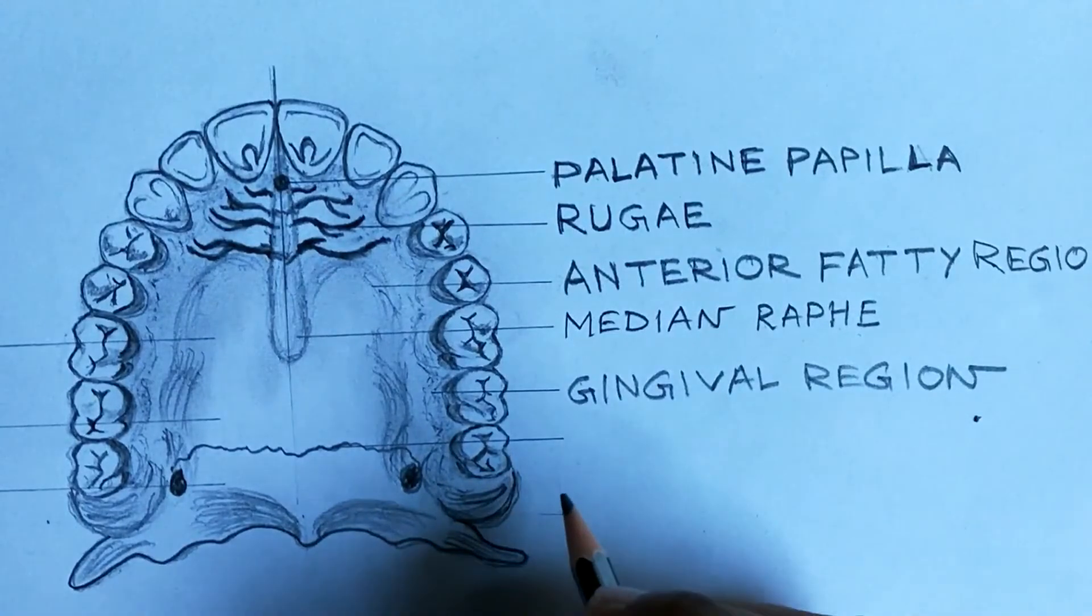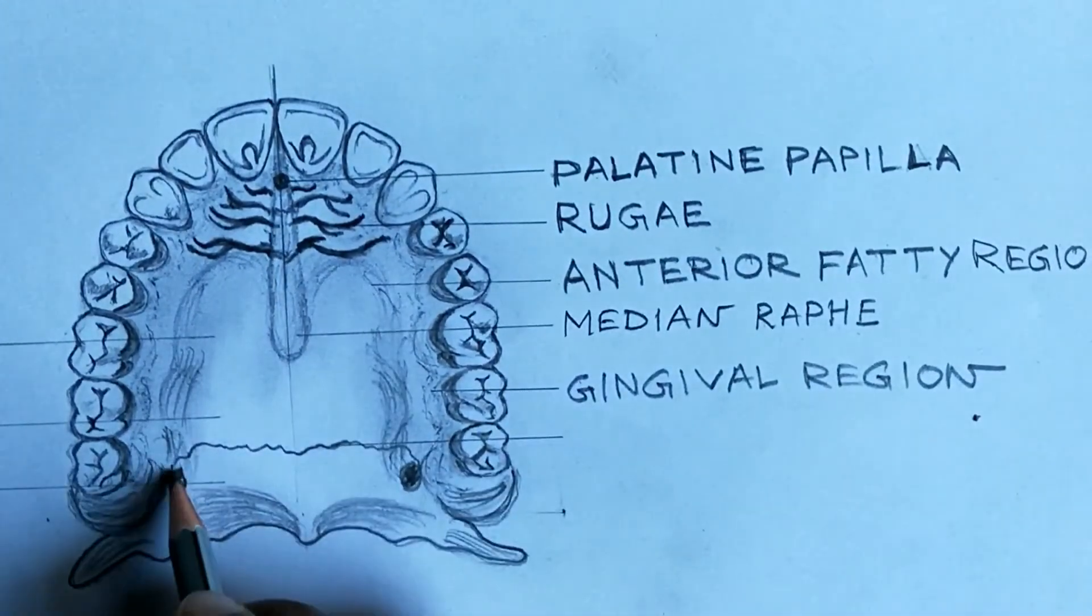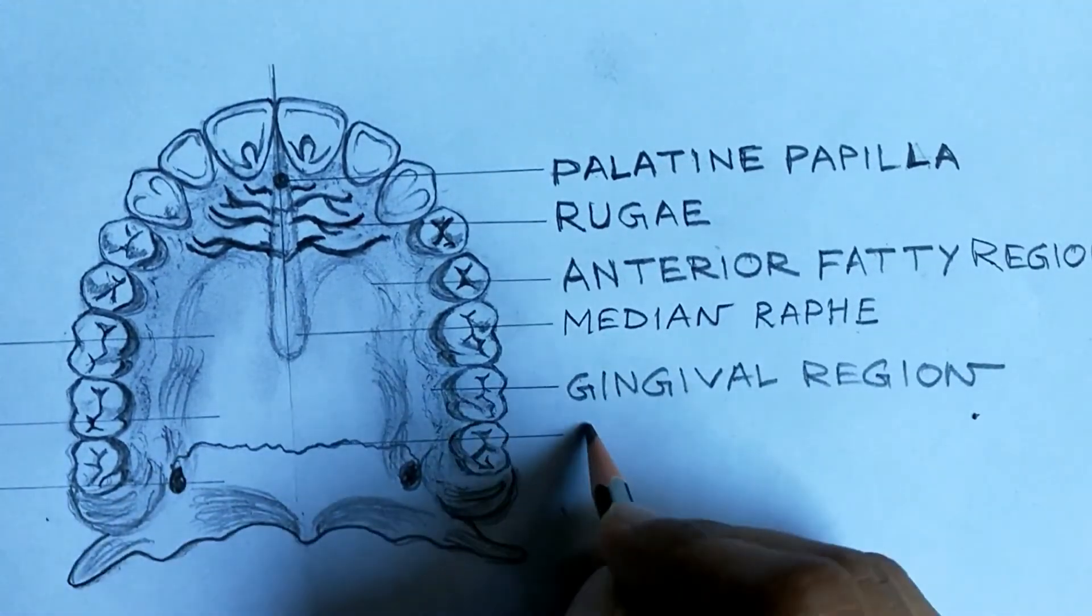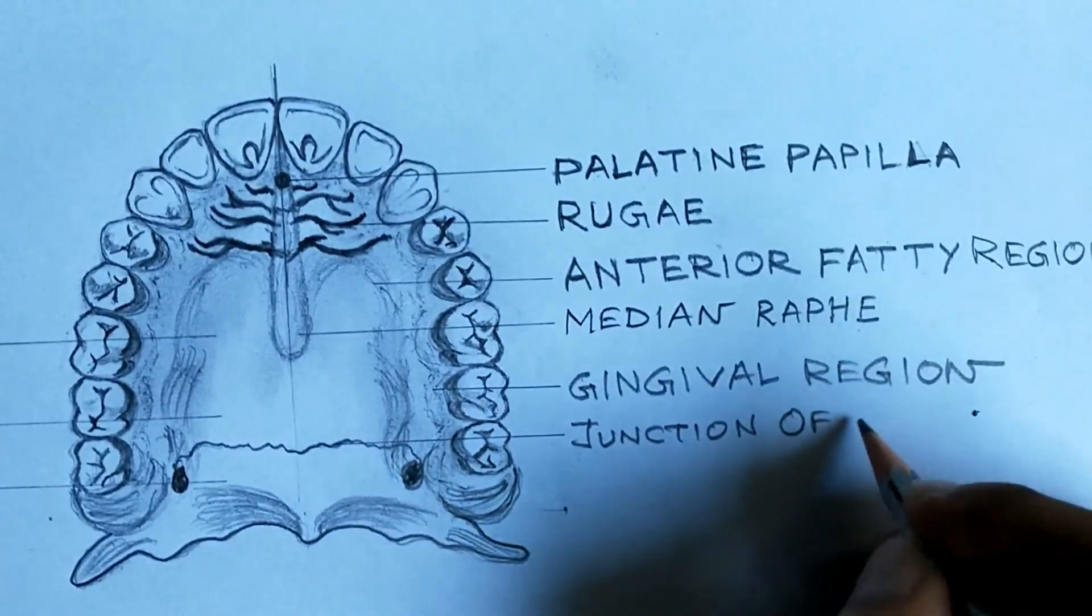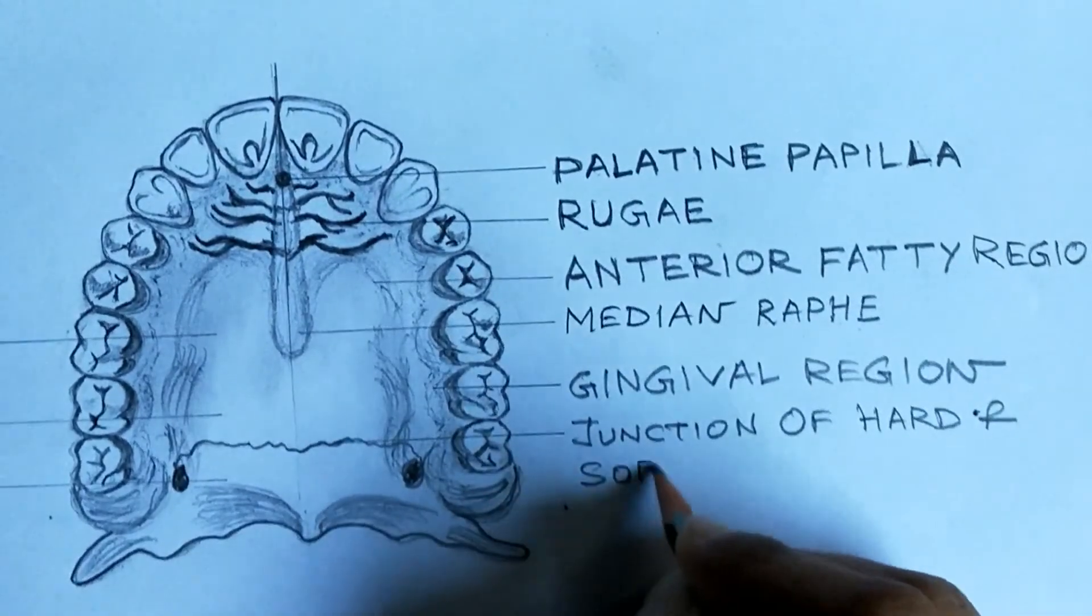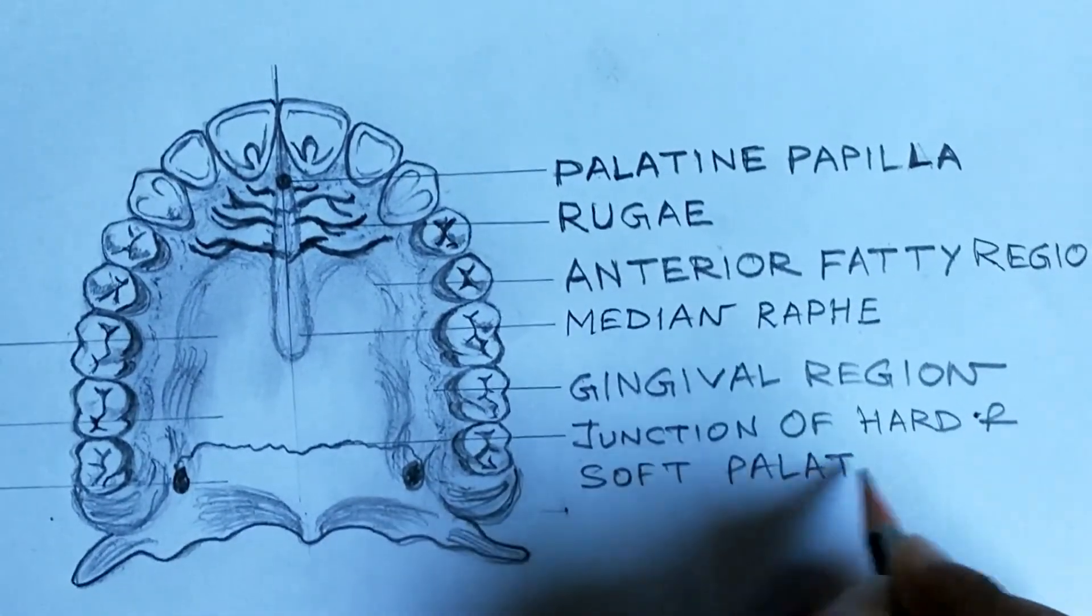Next, gingival region. You see here, both sides, the adjacent area of the teeth.